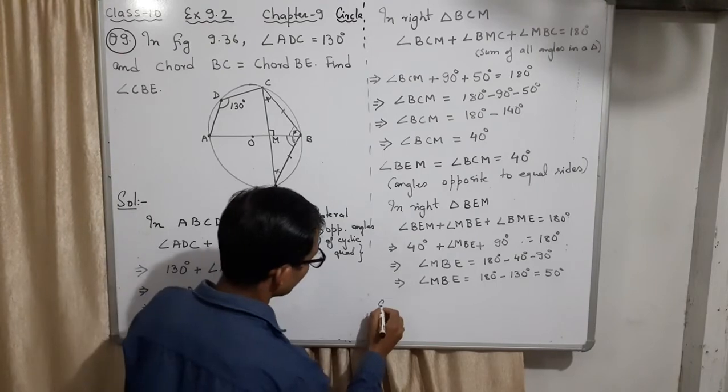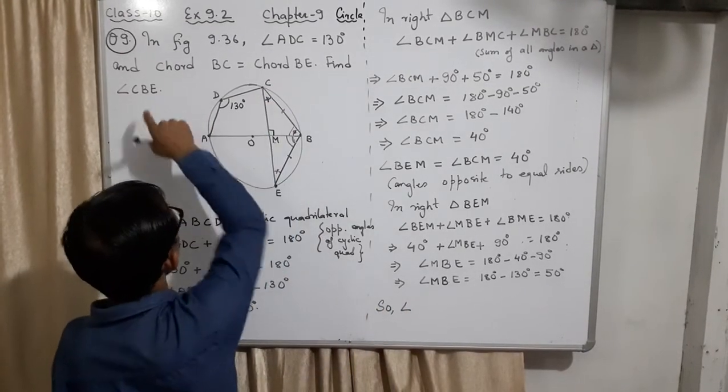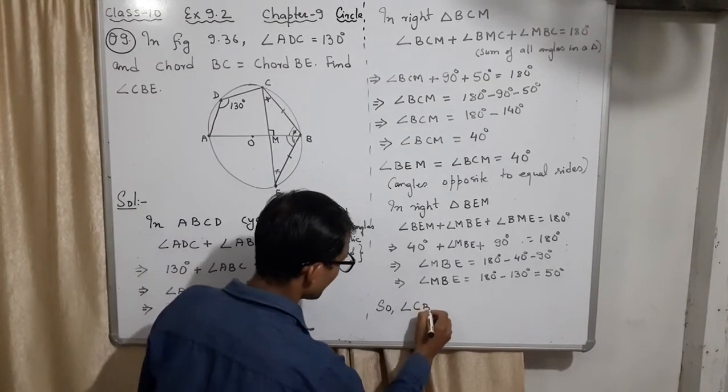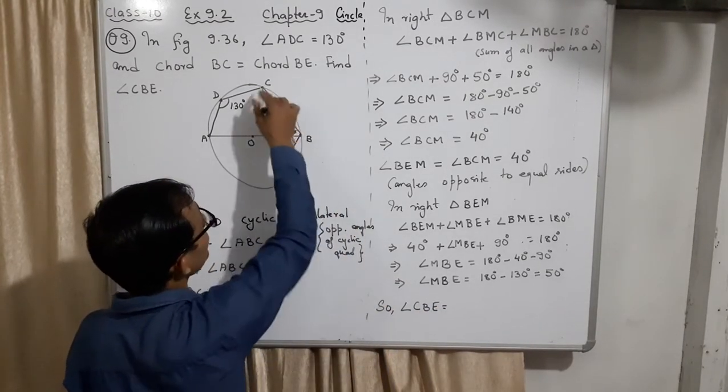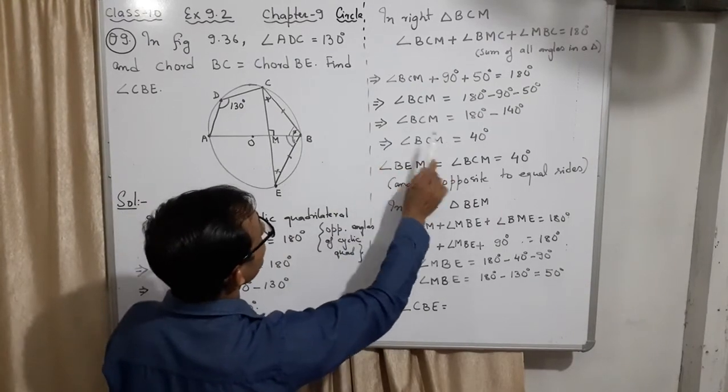So angle CBE. CBE is actually this angle. What is this? We found it. What is that angle? This angle, what we have found earlier. What is this angle? This is the value of that angle. We have already calculated that. Look at here.